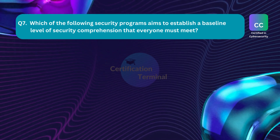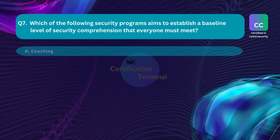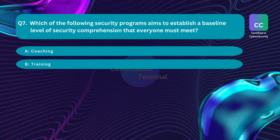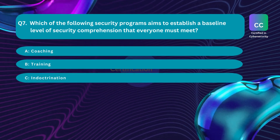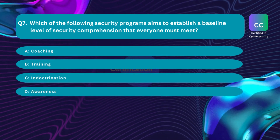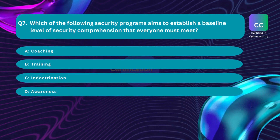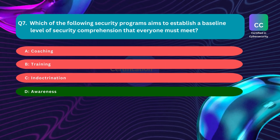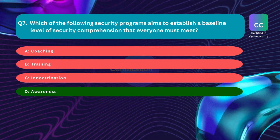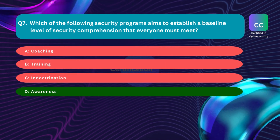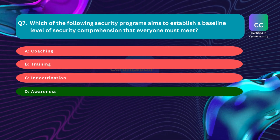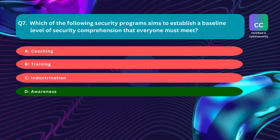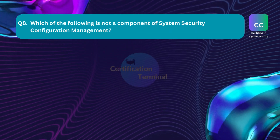Question number seven: Which of the following security programs aims to establish a baseline level of security comprehension that everyone must meet? Option A: coaching. Option B: training. Option C: indoctrination. Option D: awareness. The correct answer is Option D — awareness. Awareness establishes a minimum standard of information security understanding and is designed to accommodate all personnel in an organization regardless of their assigned tasks.